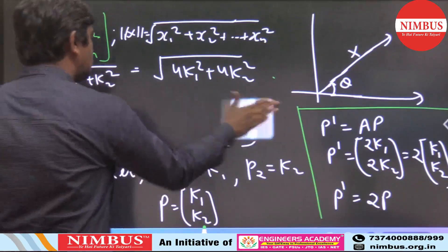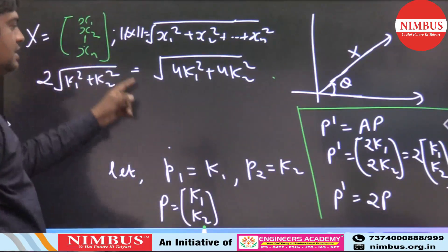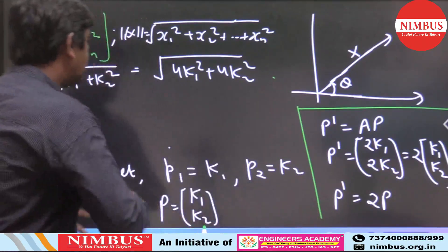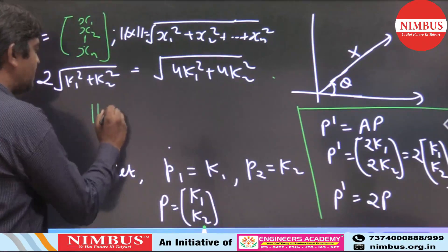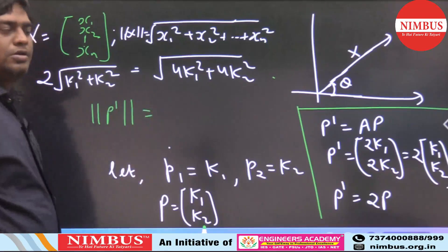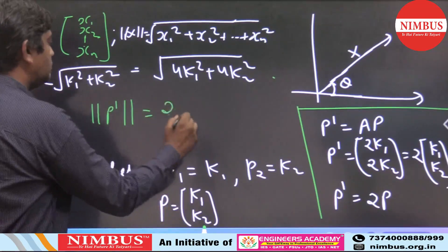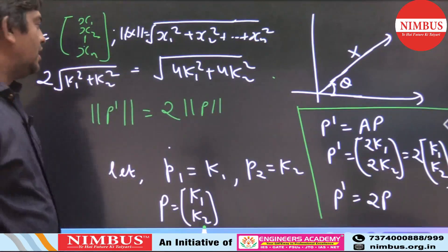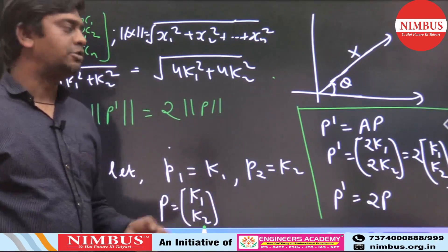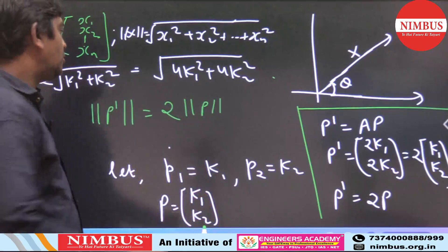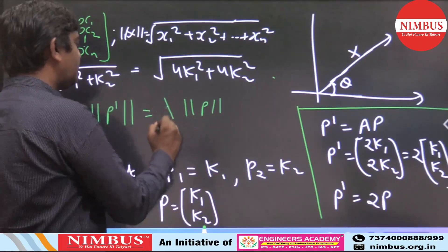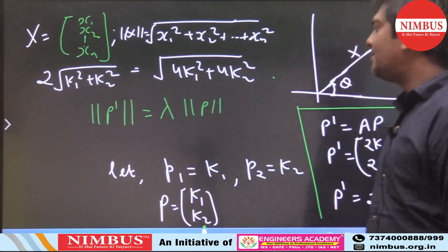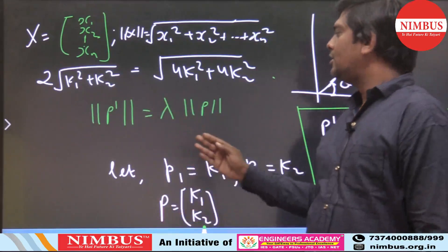Notice that the magnitude of P' is 2 times the magnitude of P (using the example eigenvalue of 2). In general, magnitude of P' = λ × magnitude of P.